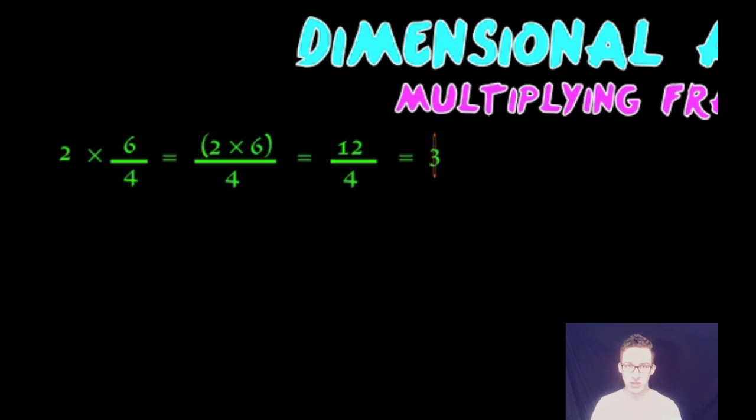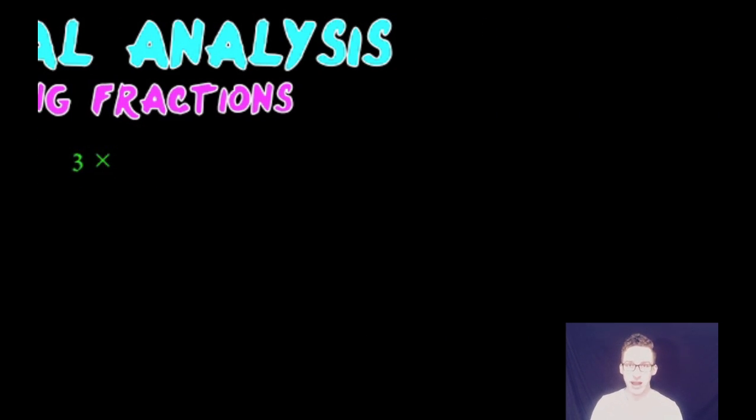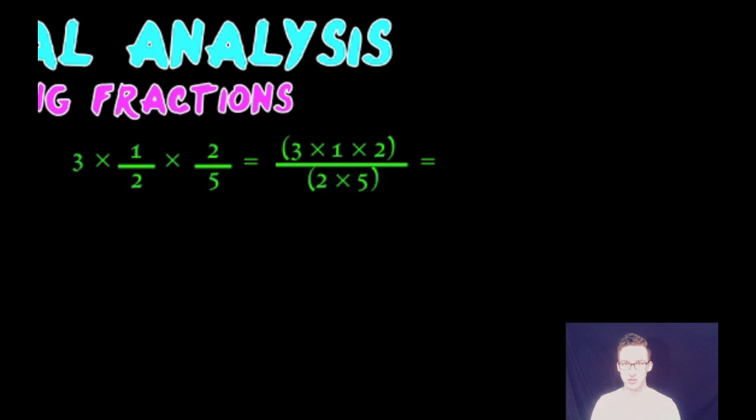Now, that was a pretty simple example. Let's see if we can't crank it up a notch, do a few more fractions at the same time. Now, we're going to have three times one over two times two over five. Again, it's simply a matter of multiplying the numbers in your numerator, multiplying the numbers in your denominator, and then dividing those two numbers.